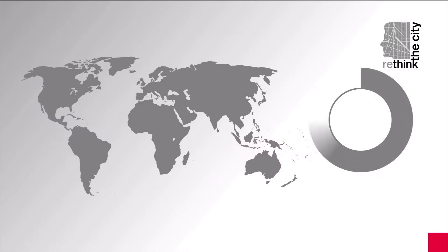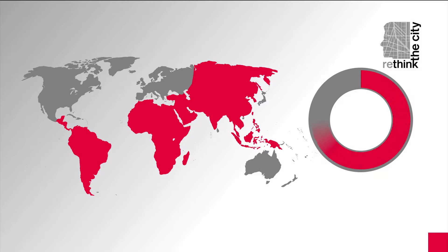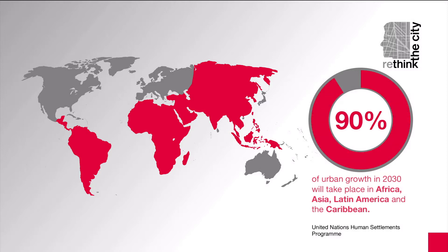Let's start by looking at the big picture. According to the United Nations Human Settlements Programme, 90% of urban growth in 2030 will take place in Africa, Asia, Latin America and the Caribbean.